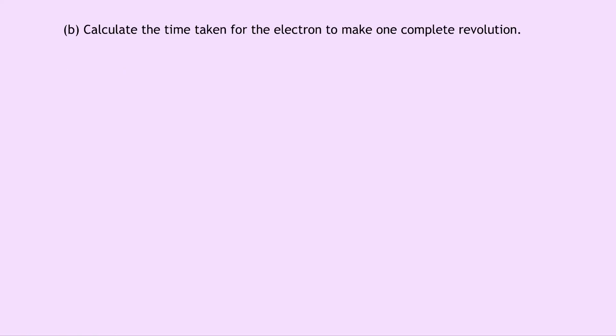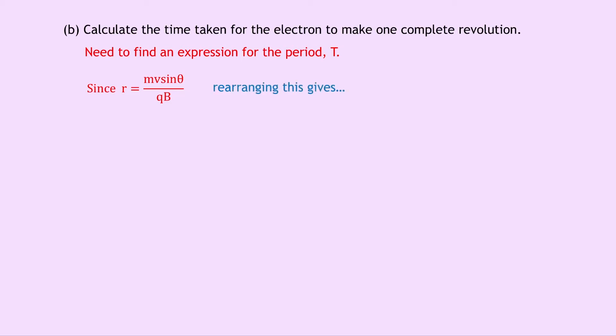Part B asks us to calculate the time for the electron to make one complete revolution — the period of the helical motion. To find an expression for the period T, we start with the expression from Part A: R equals MV sine theta over QB. Rearranging for V over R gives V over R equals QB over M sine theta, by swapping R and QB, then dividing both sides by M sine theta.